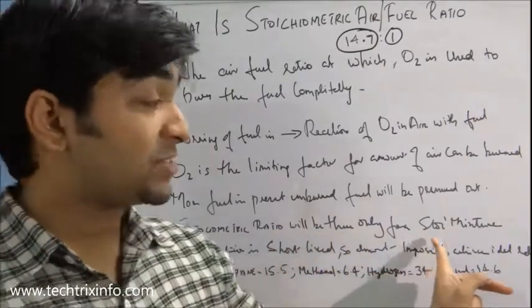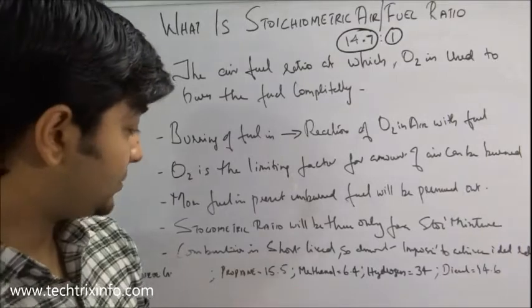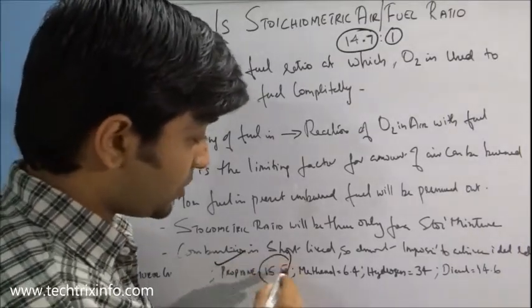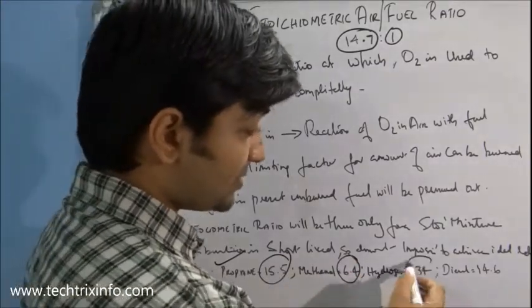And stoichiometric air ratio will be there only for a stoichiometric mixture that I have mentioned. And for propane the stoichiometric air fuel ratio is 15.5 is to 1. For methanol it is 6.4 is to 1.